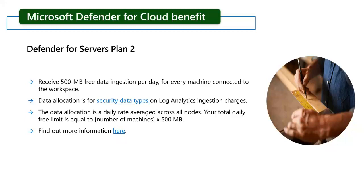Another quick mention is the Microsoft Defender for Cloud benefit with Defender for Servers Plan 2, which gives you 500 MB of free data ingestion per day for every machine connected to the workspace. Data allocation is for security data types such as security events, and the free ingestion is only applicable to log analytics ingestion charges. The data allocation is a daily rate averaged across all machines, and your total daily free limit is equal to the number of machines multiplied by 500 MB.